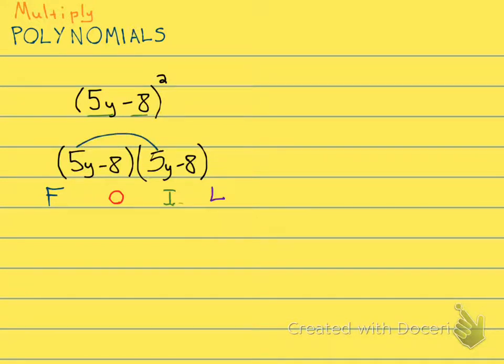5y times 5y. 25y squared. The outer two, 5y times negative 8. Negative 40y. Inner two, negative 8 times 5y. Also negative 40y.